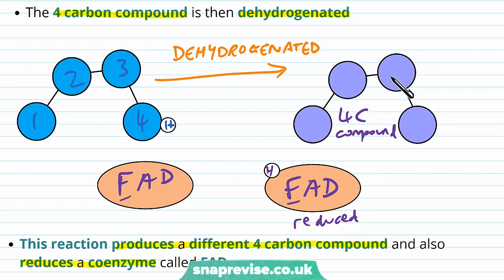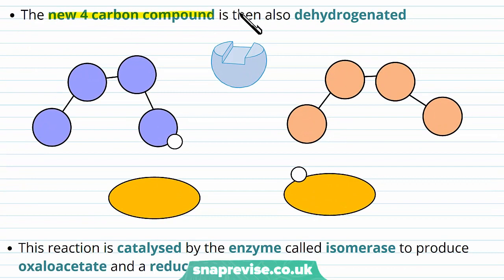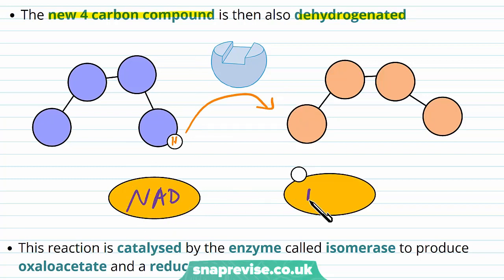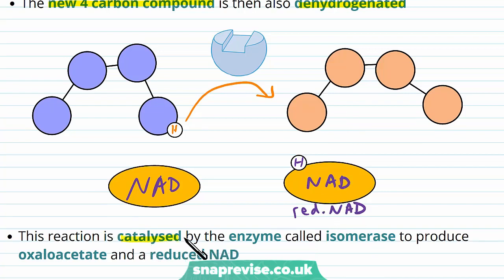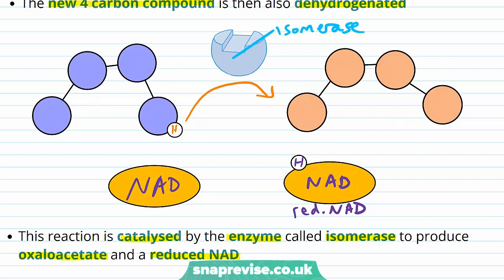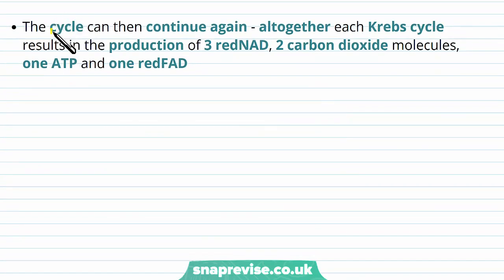The new four-carbon compound still has four carbons because no carbons have been lost. After this, it is dehydrogenated again, catalyzed by an enzyme, and this time the coenzyme is the usual NAD — so we form reduced NAD again, which is our third reduced NAD in the Krebs cycle. This reaction is catalyzed by an enzyme called isomerase, which rearranges the molecule into a different form to produce oxaloacetate and a reduced NAD. You may remember that oxaloacetate was the molecule we started with when the Krebs cycle began, which means the cycle can then continue again.